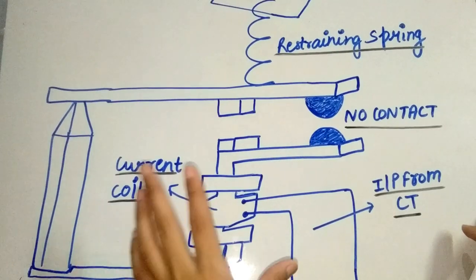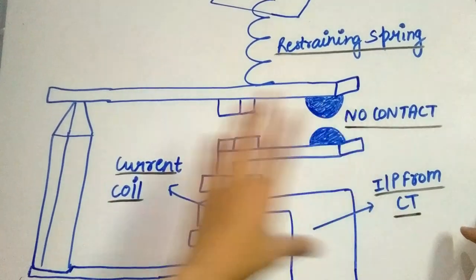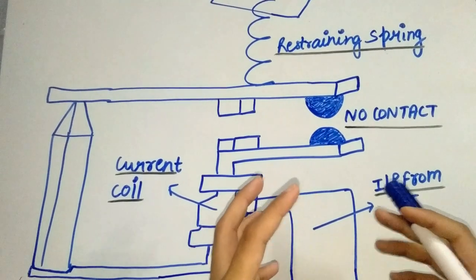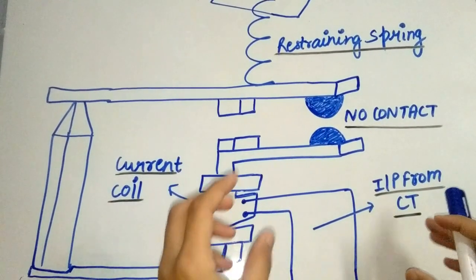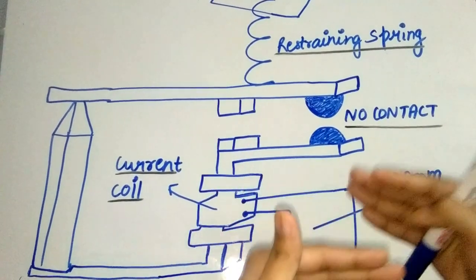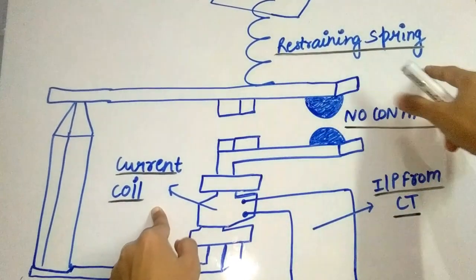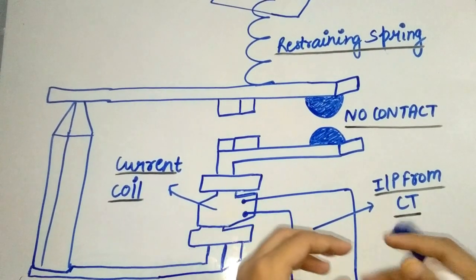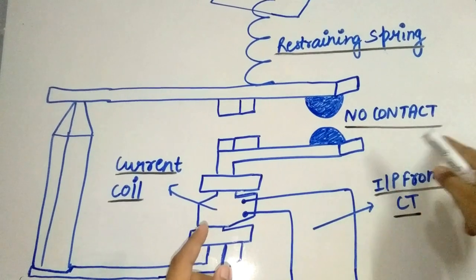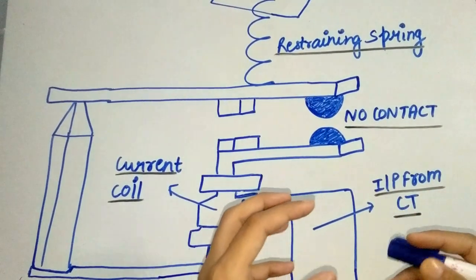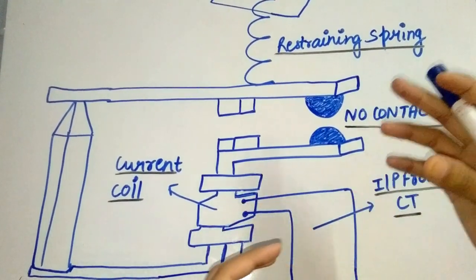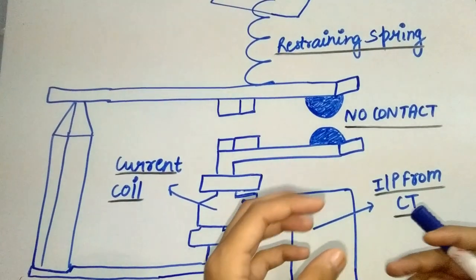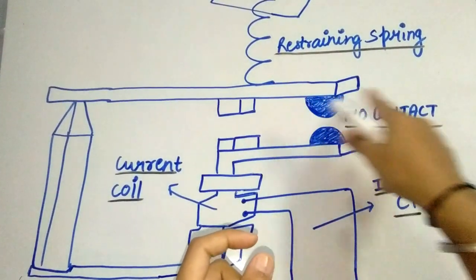First I will explain the instantaneous overcurrent relay. The construction and working principle is quite simple. There is a magnetic core wound with a current coil, a restraining spring, normally-open contacts, and input from a current transformer. When the current in the coil is not sufficient, the contacts remain open. But when the current crosses a preset value or pre-determined value, the attractive force becomes enough to pull the iron piece towards the magnetic core.